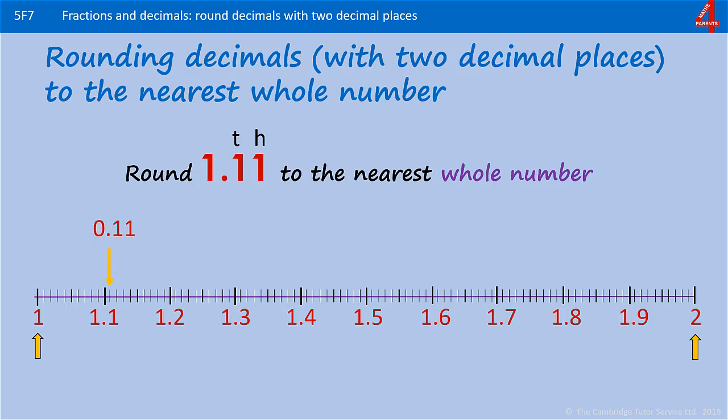But if this were 1.11, you would do exactly the same thing. 1.11 on the line, you can see is nearer to 1 than it is to 2. So the same works when it's 0.11. So it is possible to end up with a 0 when you're rounding. So 0.11 rounded to the nearest whole number is 0.